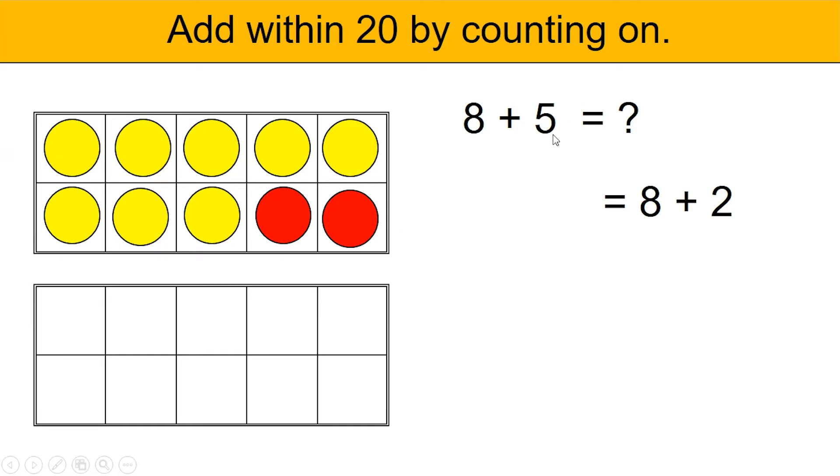But remember, we needed to add 5. Let's keep adding since we only added 2. Let's bring in 3, 4, 5. So we used 8 yellow counters plus 5 red counters.